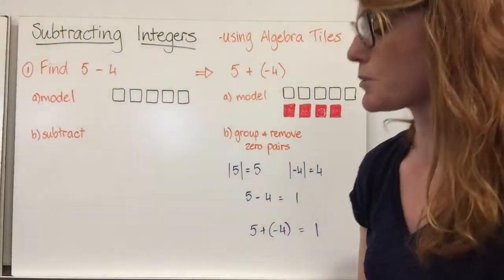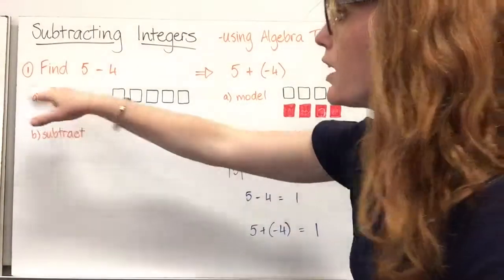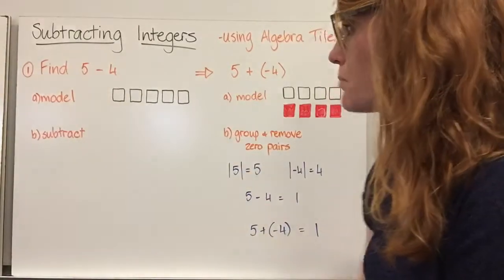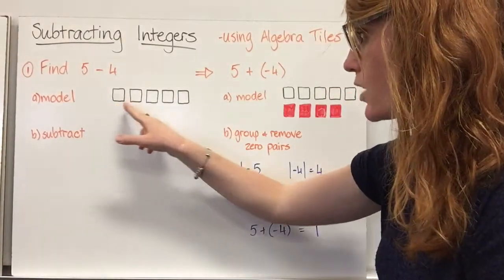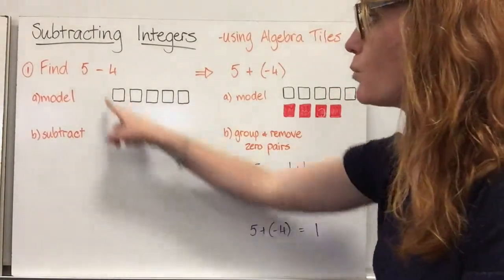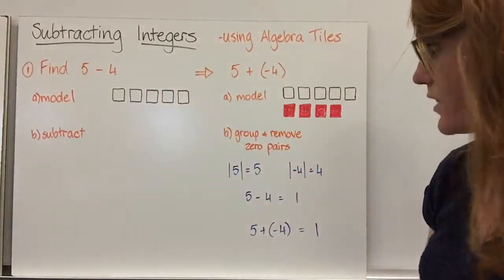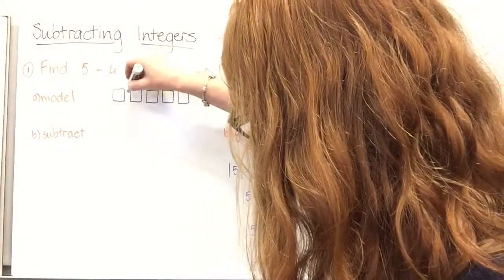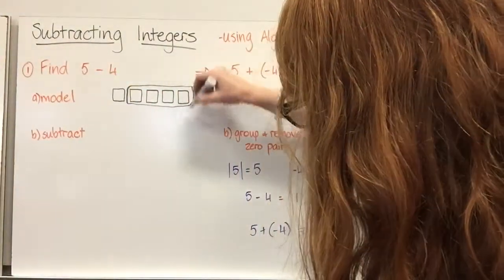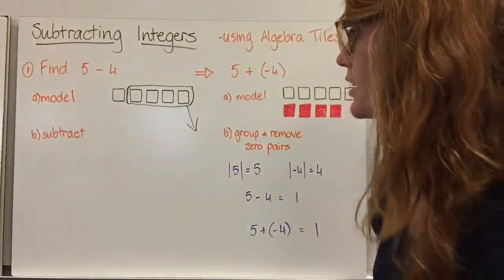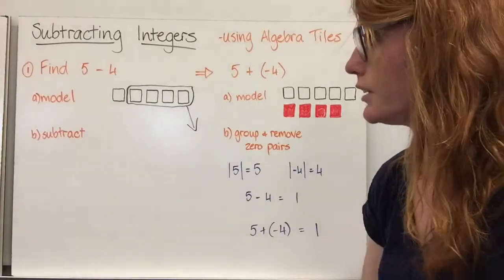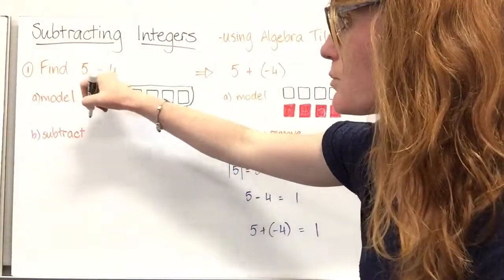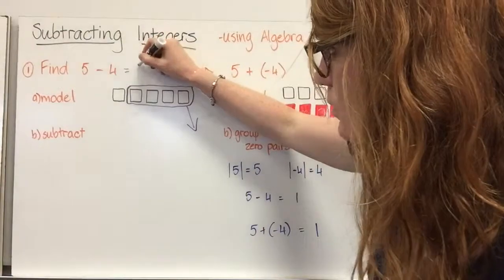Subtracting integers using algebra tiles. Number one: five subtract four. First we model — we have five positives: one, two, three, four, five. We want to subtract four of them, so we remove four positives. We are left with one positive. So five subtract four equals one.